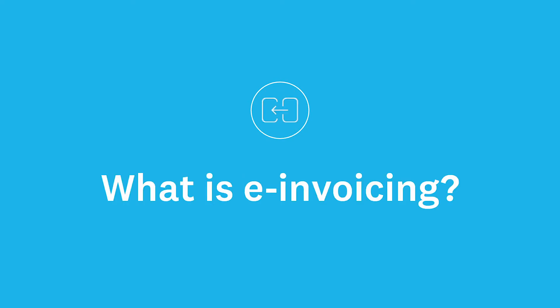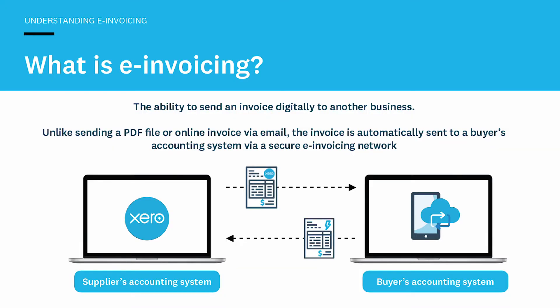The Singapore government is encouraging businesses to become more digital by registering on the e-invoicing network. So let's take a look at what e-invoicing actually means and how it works. E-invoicing is really simple — it's sending an invoice digitally from one business to another business. But it's much more than simply emailing an invoice or using an instant messaging app, because when you send an invoice via a secure e-invoicing or PEPL network, your invoice goes automatically into the buyer's accounting system. And when you receive an invoice from your supplier via the PEPL network, that invoice goes automatically into your accounting system. So straight away there's a big time saving — you don't need to manually copy details from the invoice into your system, and it avoids mistakes that can occur when you copy the wrong amounts or wrong dates.